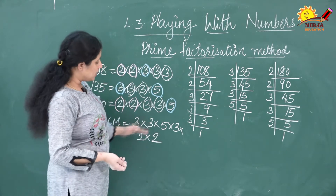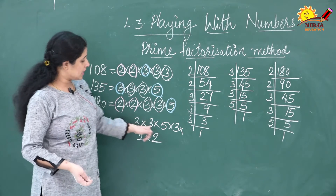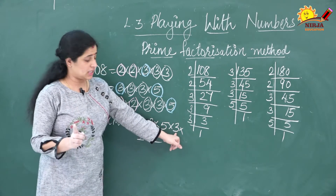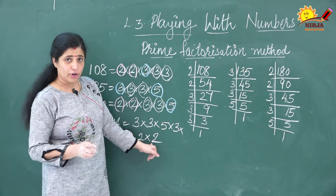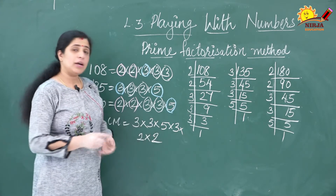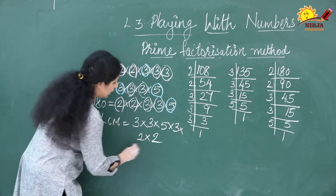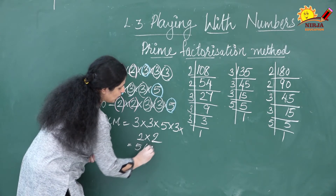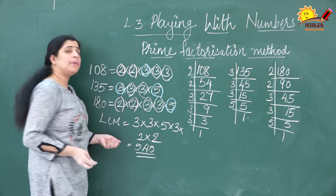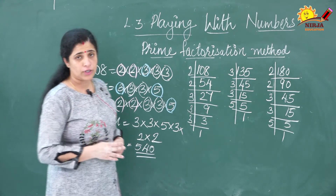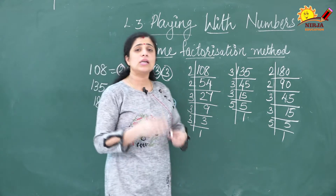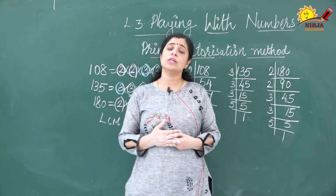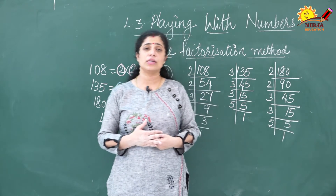Now multiply all these numbers: 3 × 3 = 9, 9 × 3 = 27, 27 × 2 = 54, 54 × 10 = 540. So the LCM of these three numbers — 108, 135, and 180 — is 540. This is how you calculate the LCM using the prime factorization method.